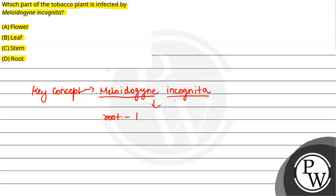It's a root knot nematode and as the name suggests, it generally affects roots. It infects roots of plants. Examples include tobacco plants.